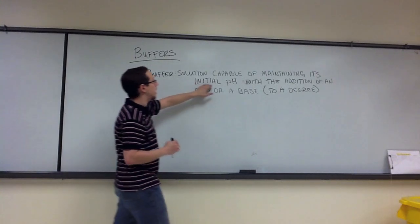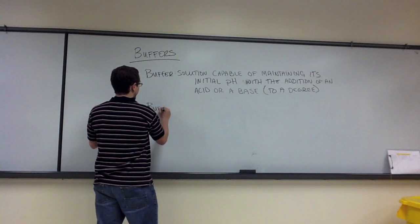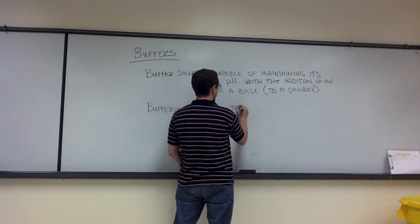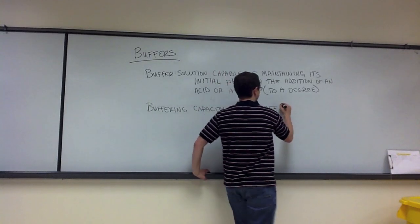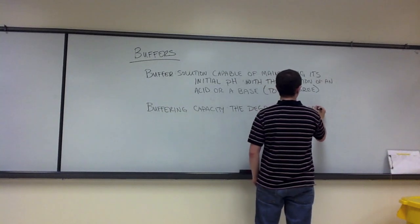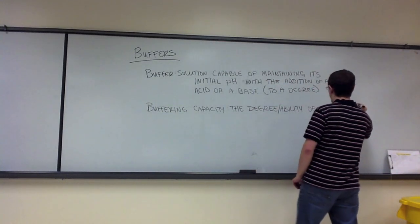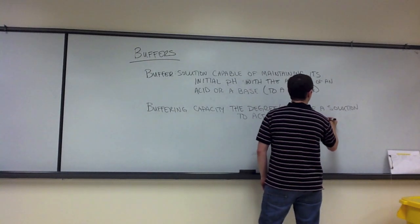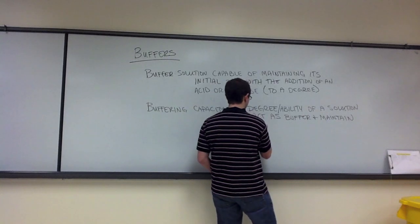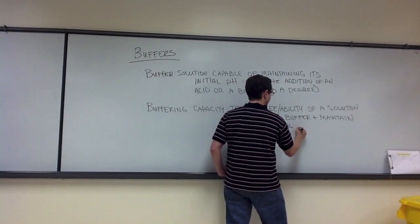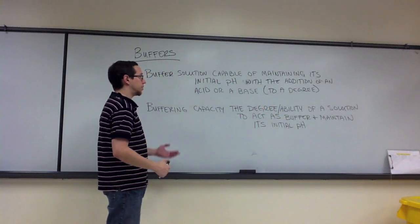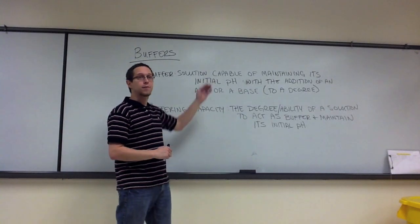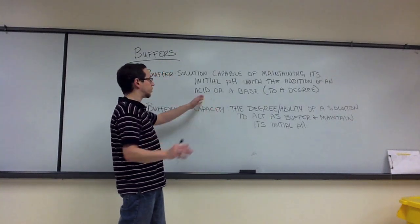A solution's ability to maintain its initial pH is known as the buffering capacity. So that is defined as the degree or ability of a solution to both act as a buffer and thereby maintain its initial pH. So there are differing degrees of buffers. There can be some buffers that can maintain their pH for a little while with the addition of a small amount of acid or base. There are others that might have a really high buffering capacity and can then maintain their pH with the addition of much more acid or base.